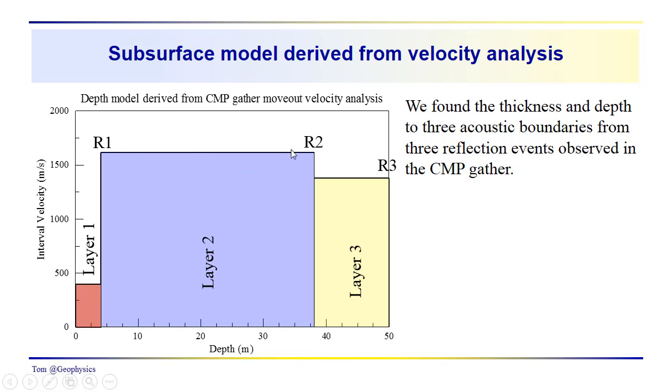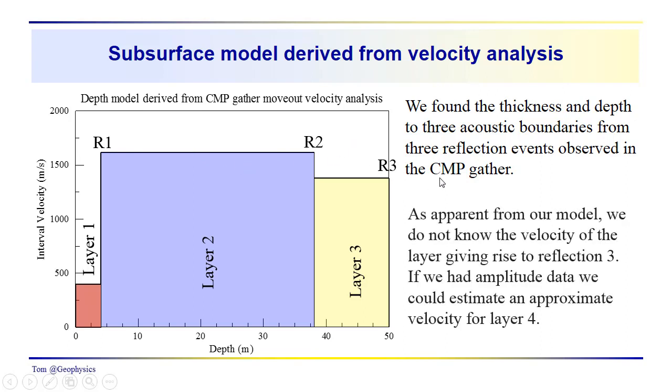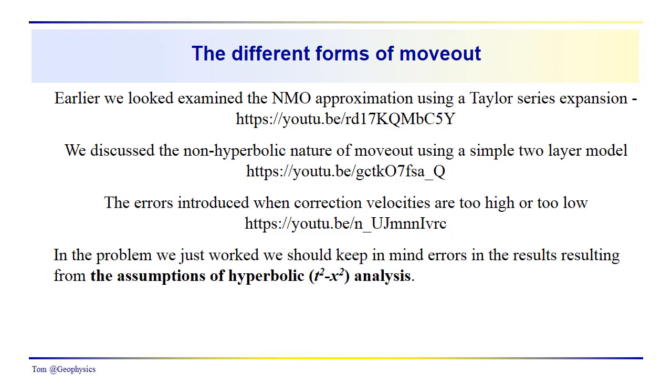So we really don't have a velocity for layer 4. If we had amplitude information we would have known, we could estimate or approximate what the velocity was for layer 4. Also, if we had amplitude information we would have seen that there would have been a polarity reversal here for the reflection from the interface between layers 2 and layers 3. So amplitude information is very helpful, as we've discussed previously. We just didn't have it here, we're just working with the TX data from a common midpoint gather.